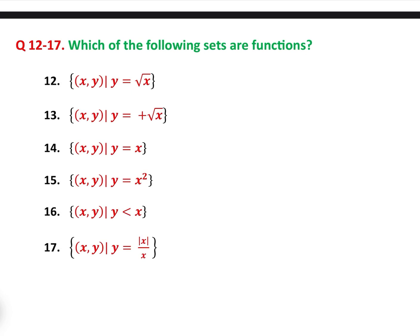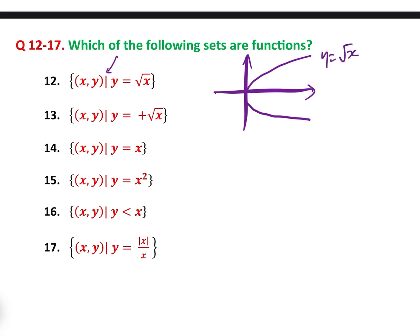Let's explain what this set notation is. Question 12 is the set of (x, y) such that y equals the square root of x. The way I tend to solve these is just to draw the graph. y equals root x is a curve — and clearly that fails the vertical line test, so that is not a function.